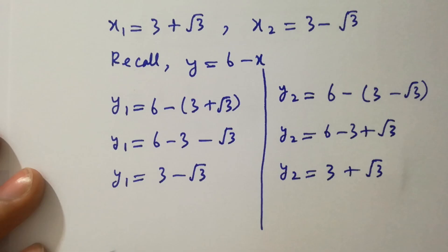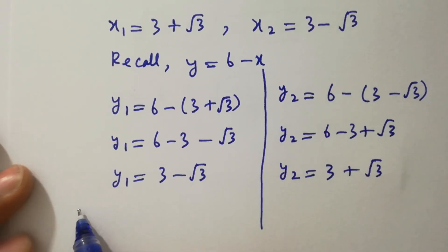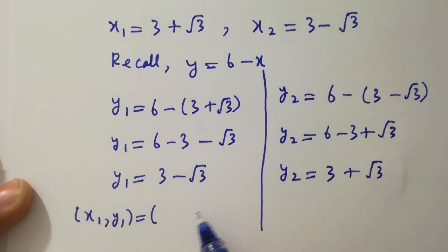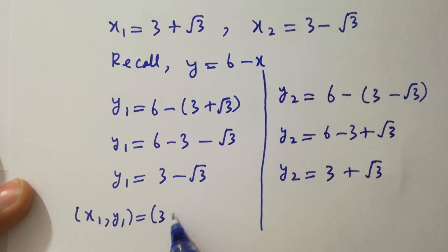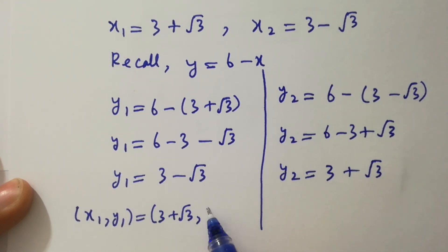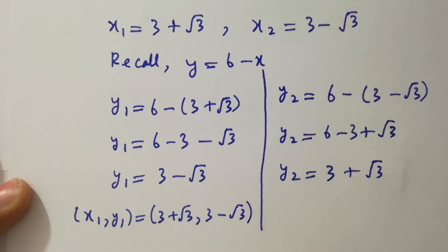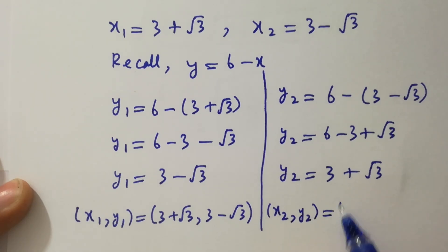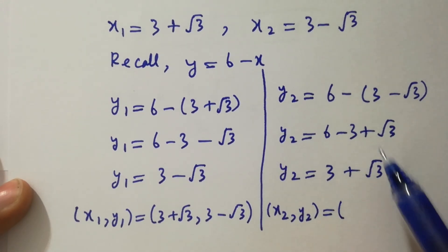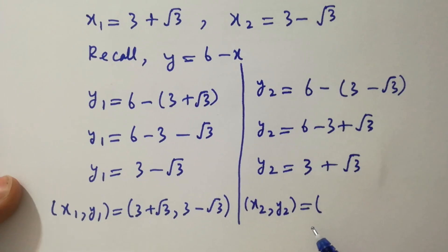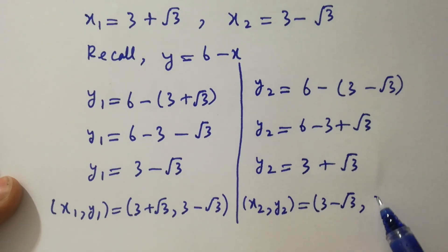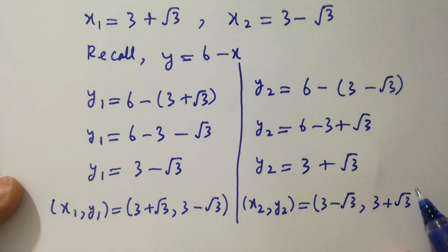So the solution pairs are: x1 equal to 3 plus square root of 3 and y1 equal to 3 minus square root of 3; and x2 equal to 3 minus square root of 3 and y2 equal to 3 plus square root of 3.